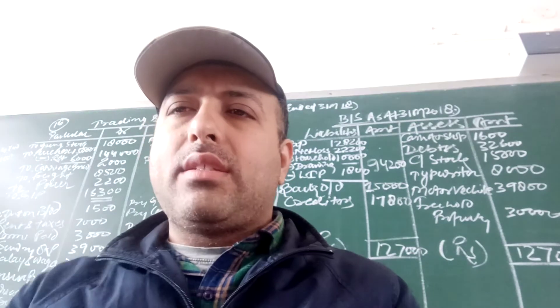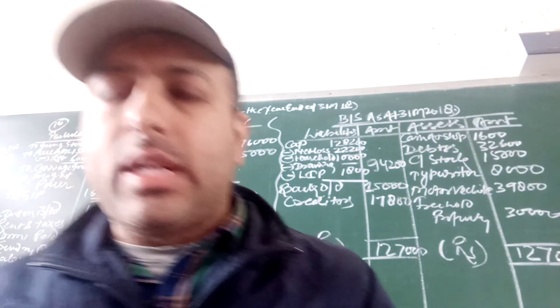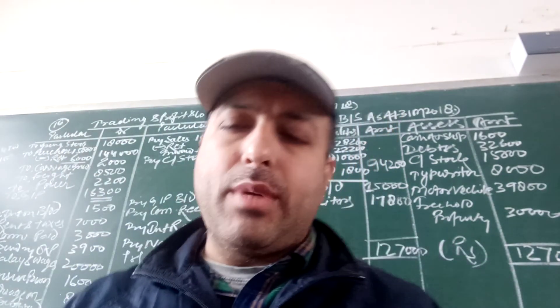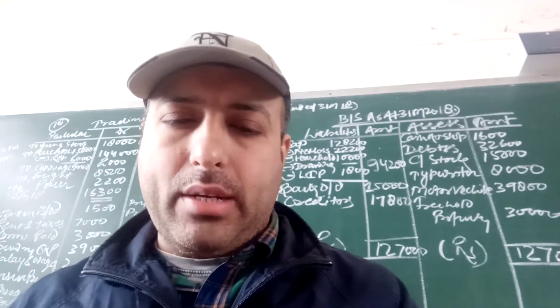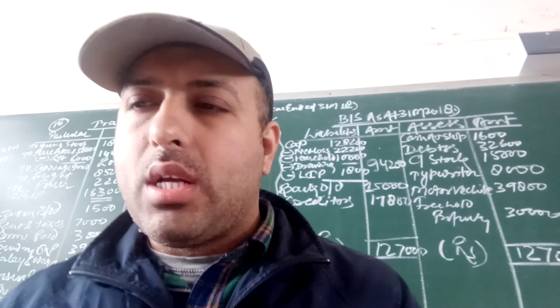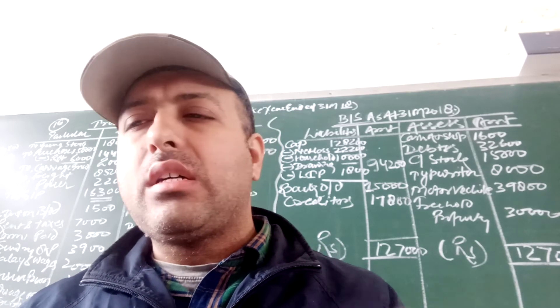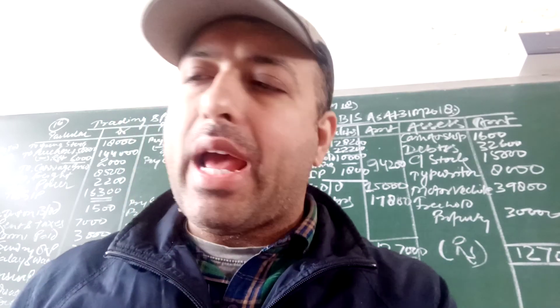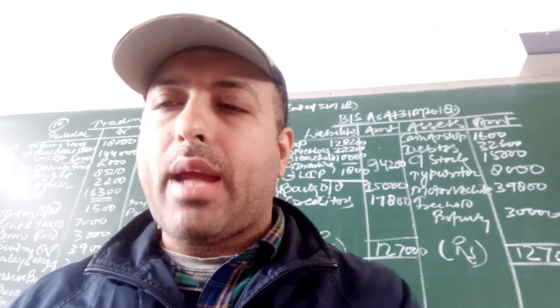So class, today I will start the cooperative organization, the difference between cooperative society and joint stock company. Yesterday I have discussed regarding the management and control. Next I have distribution of surplus. The profits of a company are distributed as dividend in proportion to the capital contributed by the members.